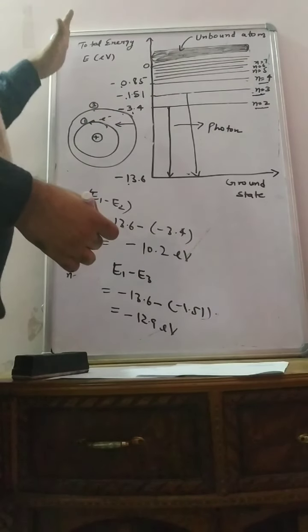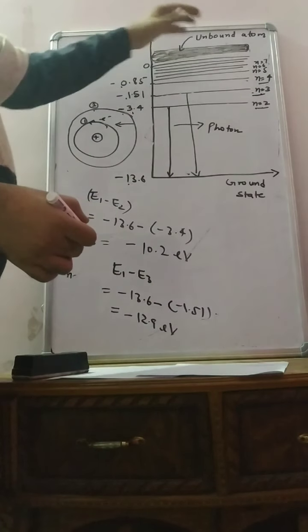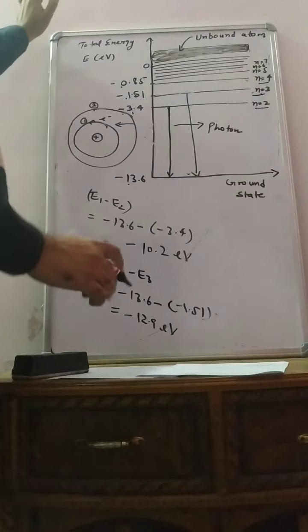This is all about the total energy level. So when n is equal to infinity at that moment, that electron will free from the atom.